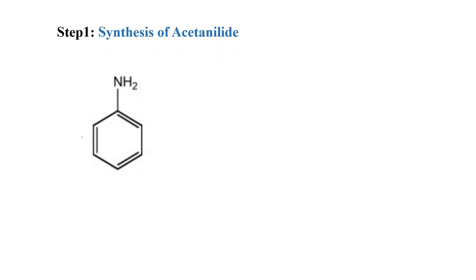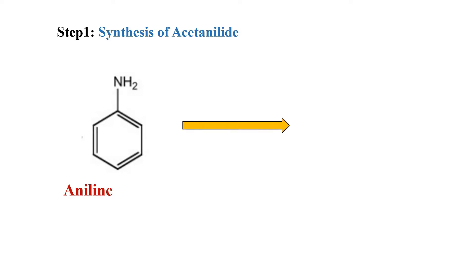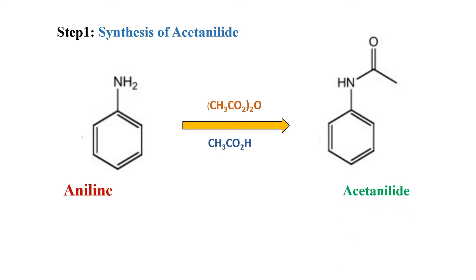Starting with the first step, that is synthesis of acetanilide. In this step, aniline will react with acetic anhydride to synthesize the acetanilide. This reaction is a nucleophilic addition-elimination reaction. The amine is an electron-donating group that directs electrophilic aromatic substitution at the ortho and para positions. Acetic anhydride is used instead of acetic acid because its carbonyl carbon is more electrophilic, so the amide formation will be faster and easier.